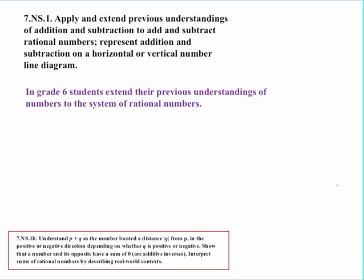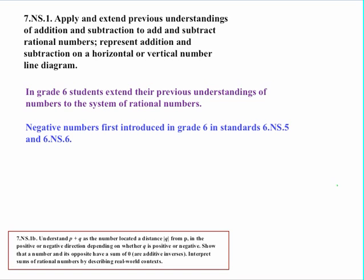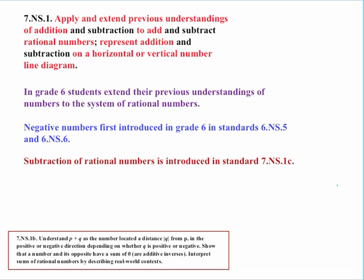That's quite a bit, so let's take it a little bit at a time. In the preliminary statement for Standard 7.NS.1, it talks about previous understandings of addition and subtraction. In Grade 6, students extended their previous understanding of numbers to the rational numbers, and negative numbers were introduced in Standards 6.NS.5 and 6.NS.6. Notice what's highlighted in Standard 7.NS.1: the focus here is addition, because subtraction of rational numbers is covered in the next standard, 7.NS.1C.